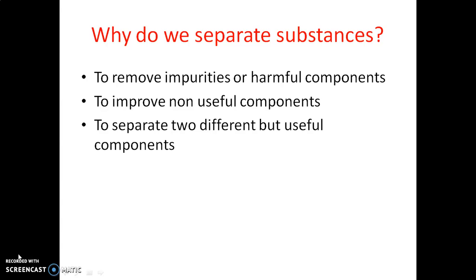The second point is to remove non-useful components. There are some non-useful components — for example, in grain there are some stones and pieces of stone. These are non-useful components, so we separate them. The next point is to separate two different but useful components. For example, two types of grains which are mixed and we have to separate them — both are useful.